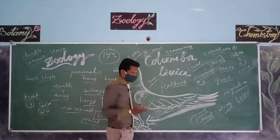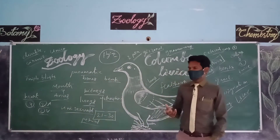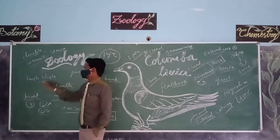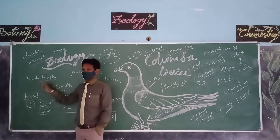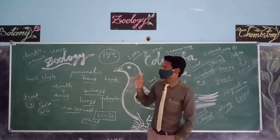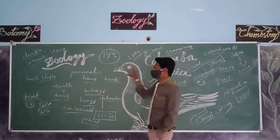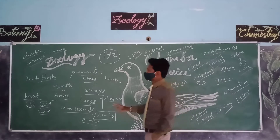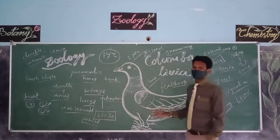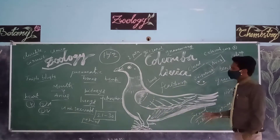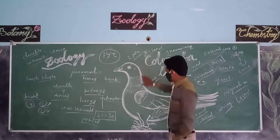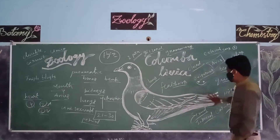Generally, Aves are chordates. A prominent backbone and spinal cord is developed. These Aves are the birds. They are developed from the triple germinal layer — ectoderm, mesoderm, and endoderm — making them triploblastic organisms. Each and every bird body is divisible into head, neck, thorax, abdomen, and tail.